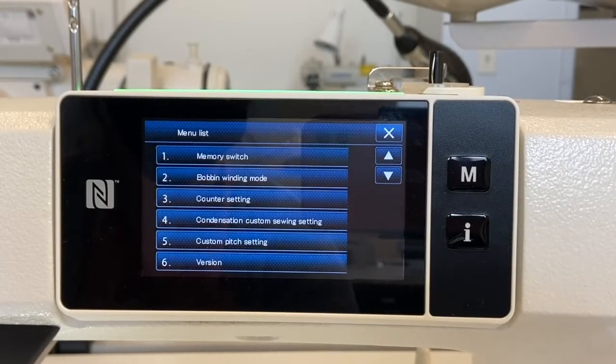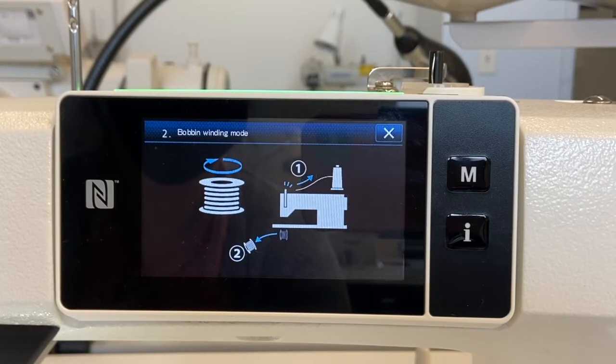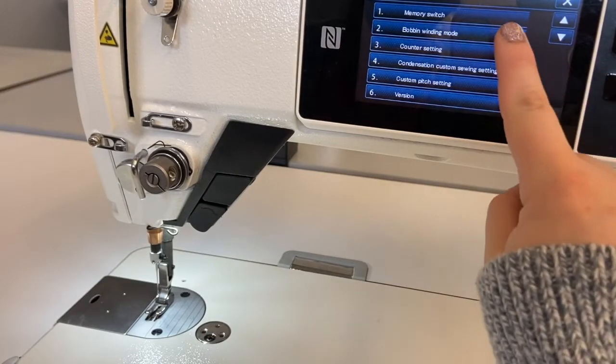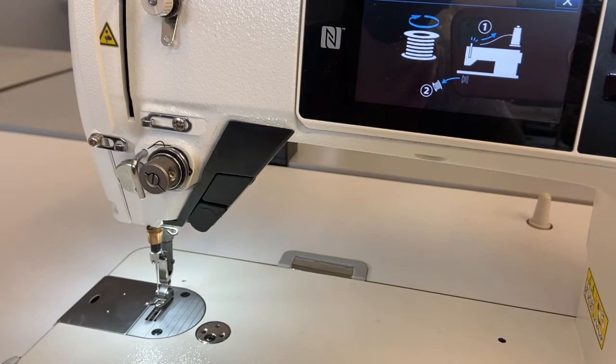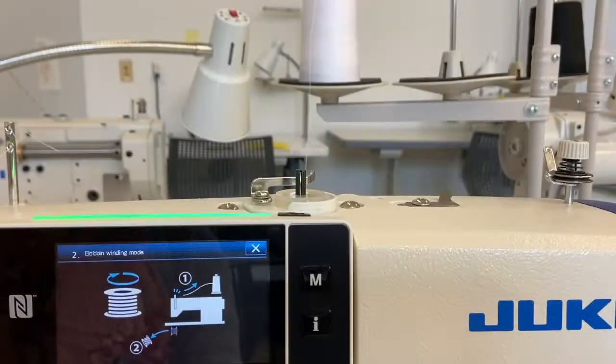When you're ready to wind the bobbin, hit the M button to go to the menu list and then select option 2, bobbin winding mode. Notice when you select this option, the presser foot automatically raises up. It will lower back down when you've completed winding the bobbin and return to the menu list.